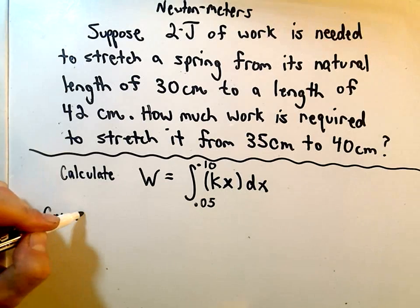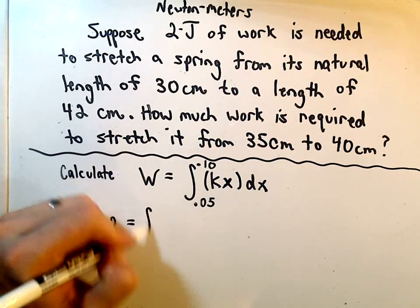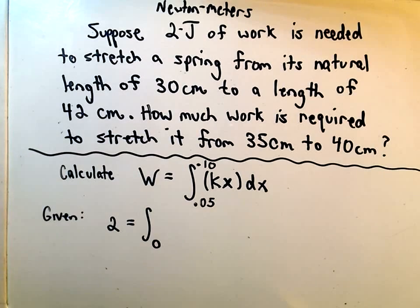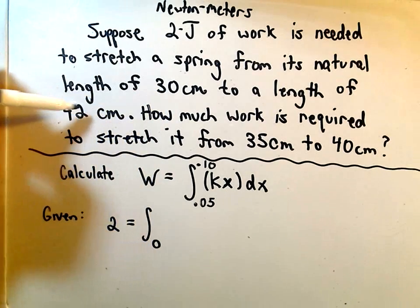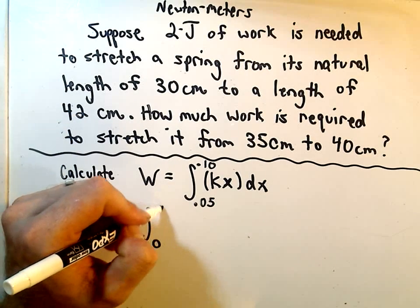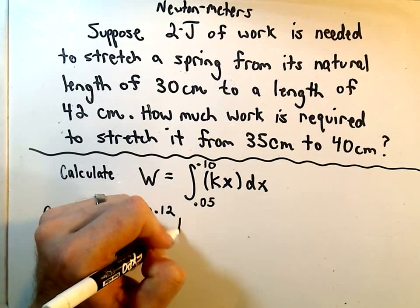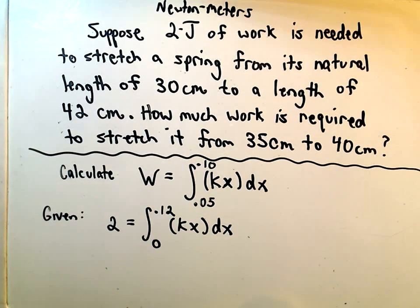What we're given, however, is we know that it takes 2 joules of work to stretch it from 0 meters beyond its natural length, because it starts at its natural length. We're going to stretch it to 42 centimeters, which is 12 centimeters beyond its natural length, or 0.12 meters. And this is what's going to allow us to solve for the spring constant k. Then we'll plug it back into the first problem and we'll be able to calculate it.